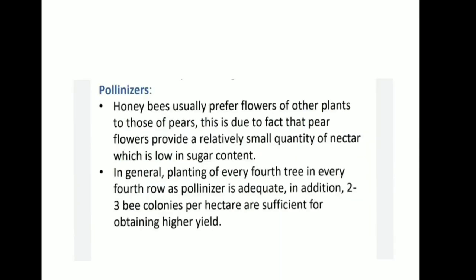Now Pollinizers, which help in pollination. Honey bees usually prefer flowers of other plants to those of pears. This is due to the fact that pear flowers provide a relatively small quantity of nectar which is low in sugar content. In general, planting of every fourth tree in every fourth row as a pollinizer is adequate. In addition, two to three bee colonies per hectare are sufficient for obtaining higher yield.